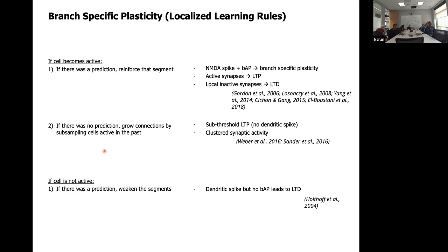There's detailed biological evidence for each of these things. We didn't know about this evidence when we came up with these learning rules — these rules were required to get our model to work. But they actually correspond very closely to something called branch-specific plasticity, which is a very localized learning rule. These are all unsupervised and all local to the neuron. This shows the power of good theoretical thinking constrained by biology: it can lead to predictions with confidence that things are actually happening, even without all the data at the time.